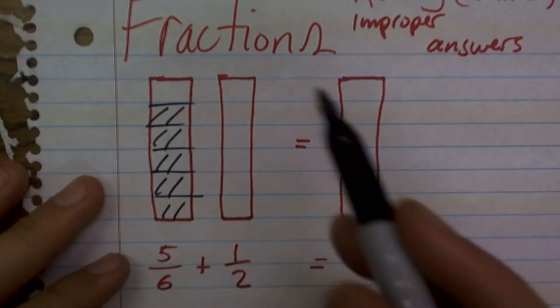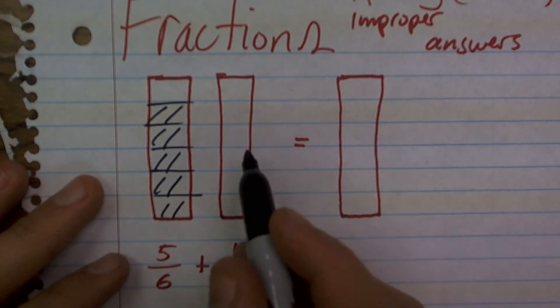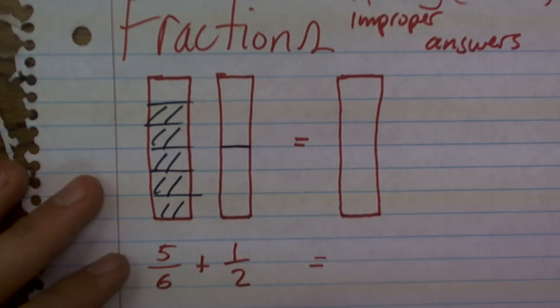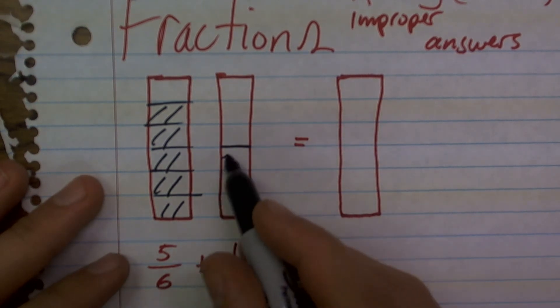One, two, three, four, five. And then one half means my whole bar is going to be broken into two parts, and I'm going to select one of those.